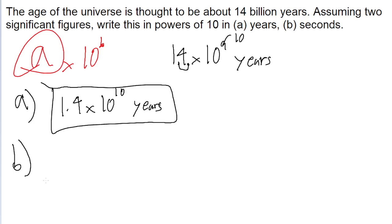Part B asks the same thing, except now we want it in units of seconds. So this means we'll have to do a chain link conversion. So 1.4 times 10 to the power of 10 years.